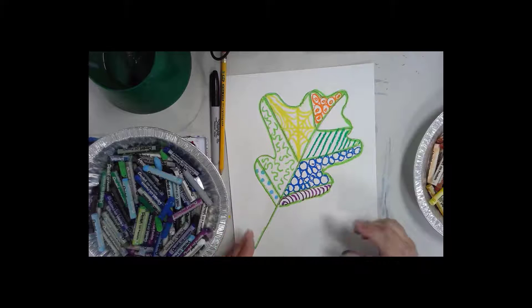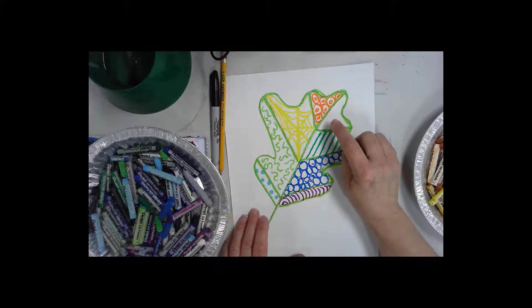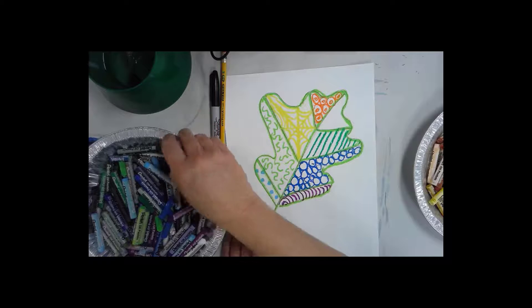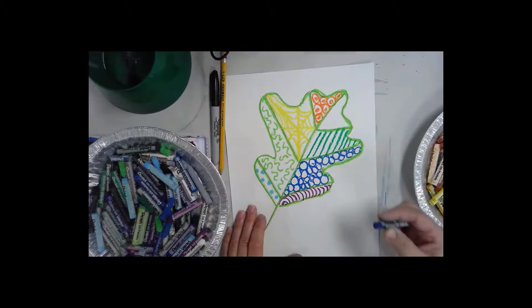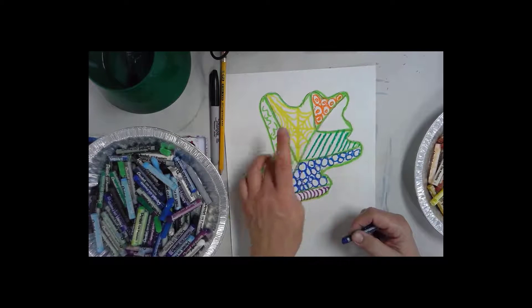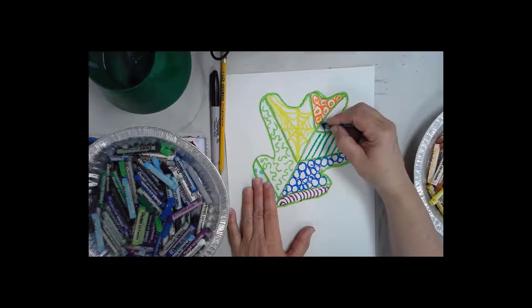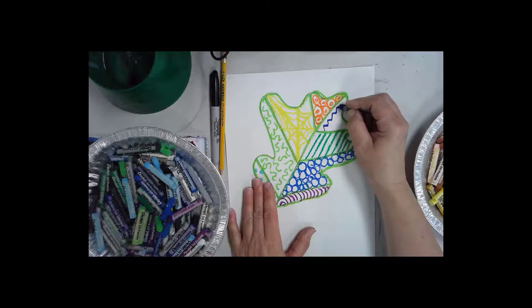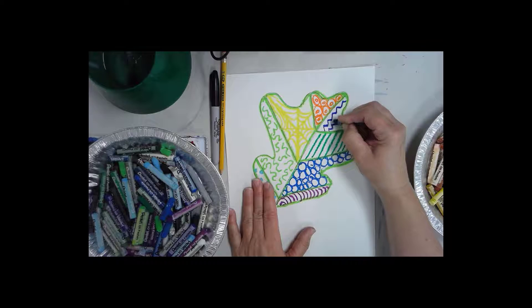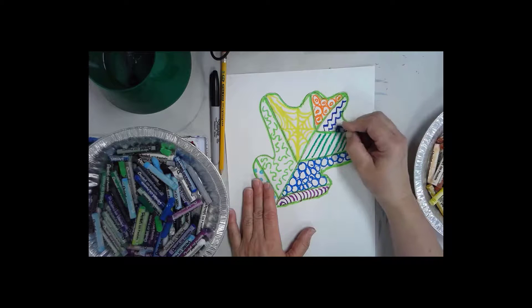I'm going to pause this while I do that. Okay, I am back and I think I'm ready. Oh, I just noticed I missed one. So double check before you move on to make sure that you have a line design in every single section of your leaf. I'm just going to quick put a zigzag in here because I forgot to do this one. And then we're going to do the last step.